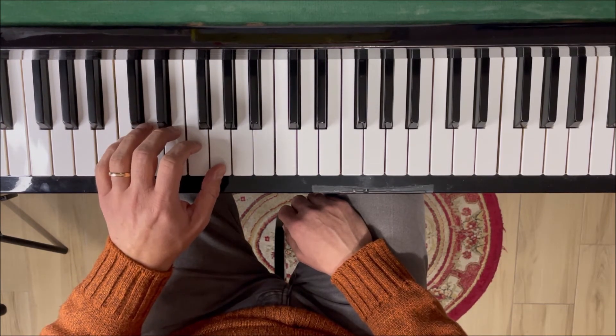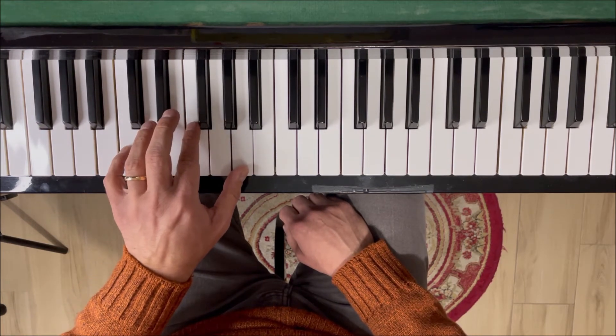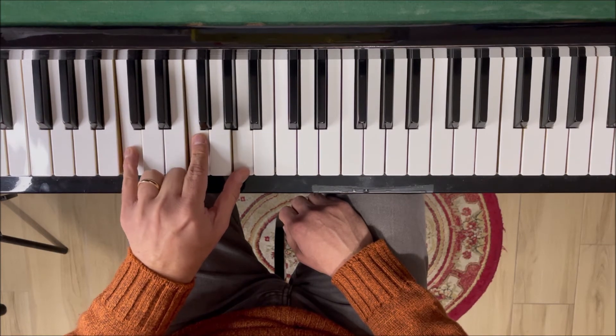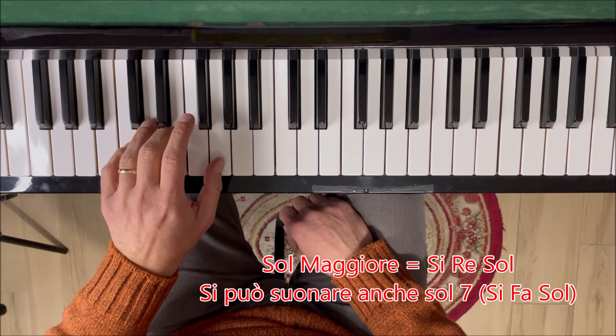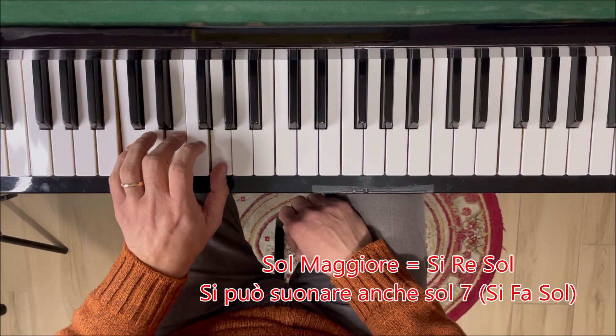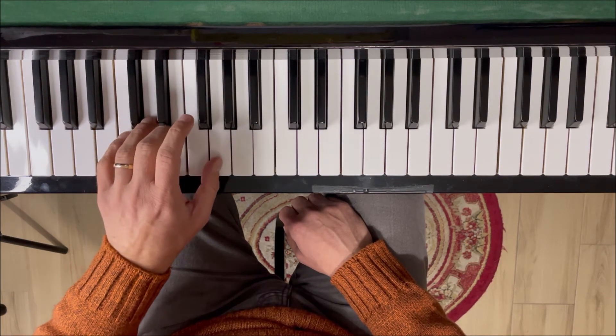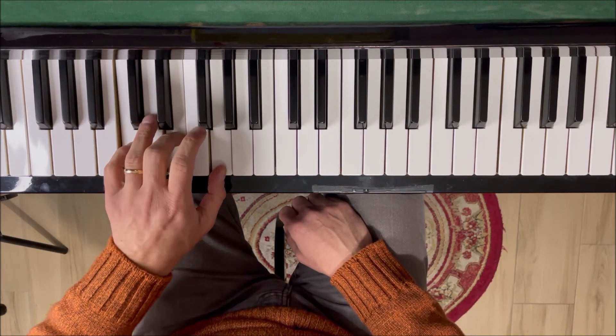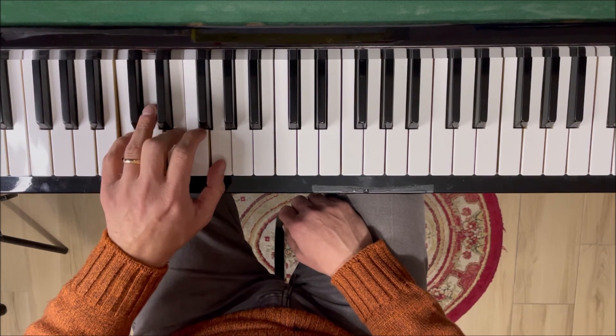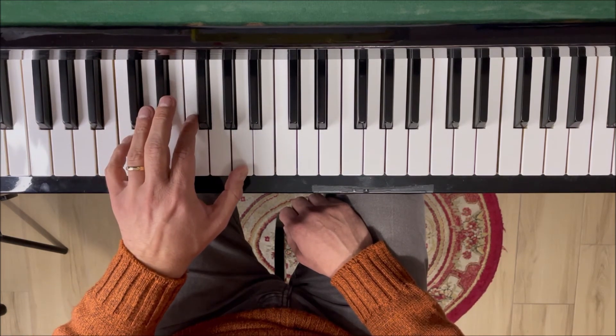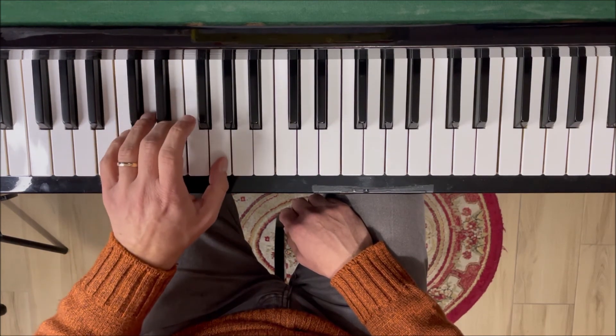Questa è la prima parte che va ripetuta due volte. Ora la seconda parte: fa maggiore per due battute, do maggiore una battuta, sol maggiore una battuta, do maggiore per due battute, e per finire fa maggiore, sol settima in una battuta, e do maggiore.